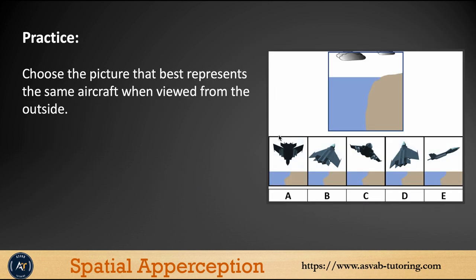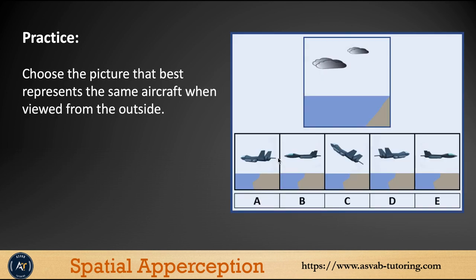There are a few more practice questions for you to try by yourself. You can see the horizon on the upper side of the image — upper means the aircraft is going downward, so identify the correct answer option. Try these practice questions by yourself and make sure that you understand.